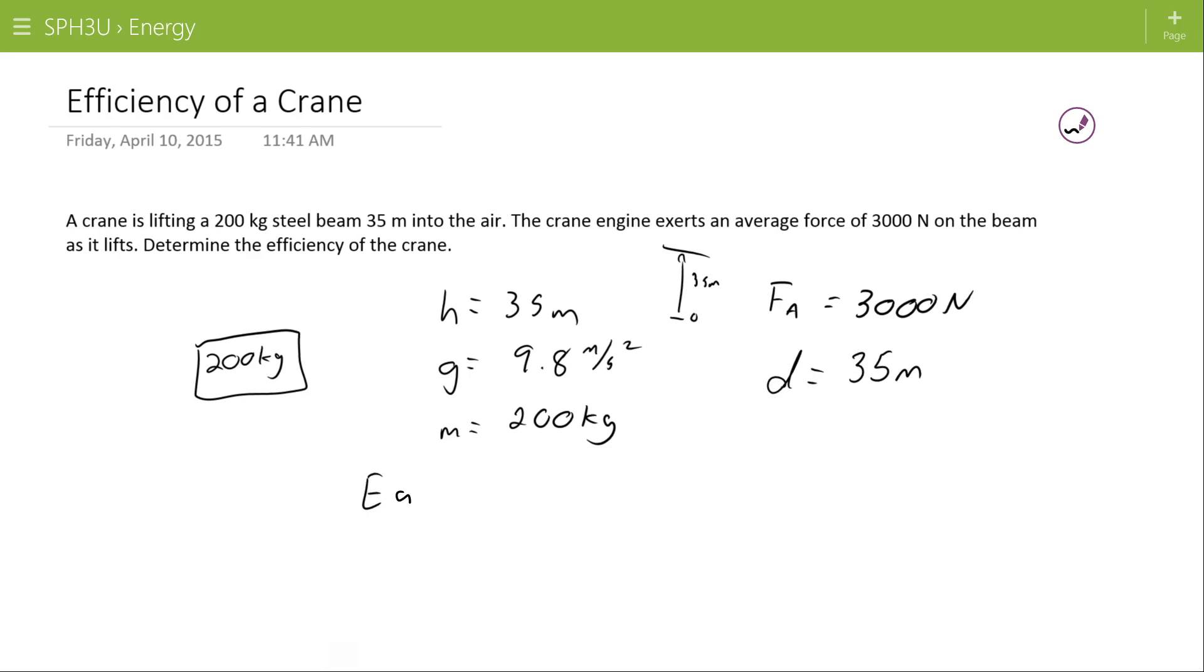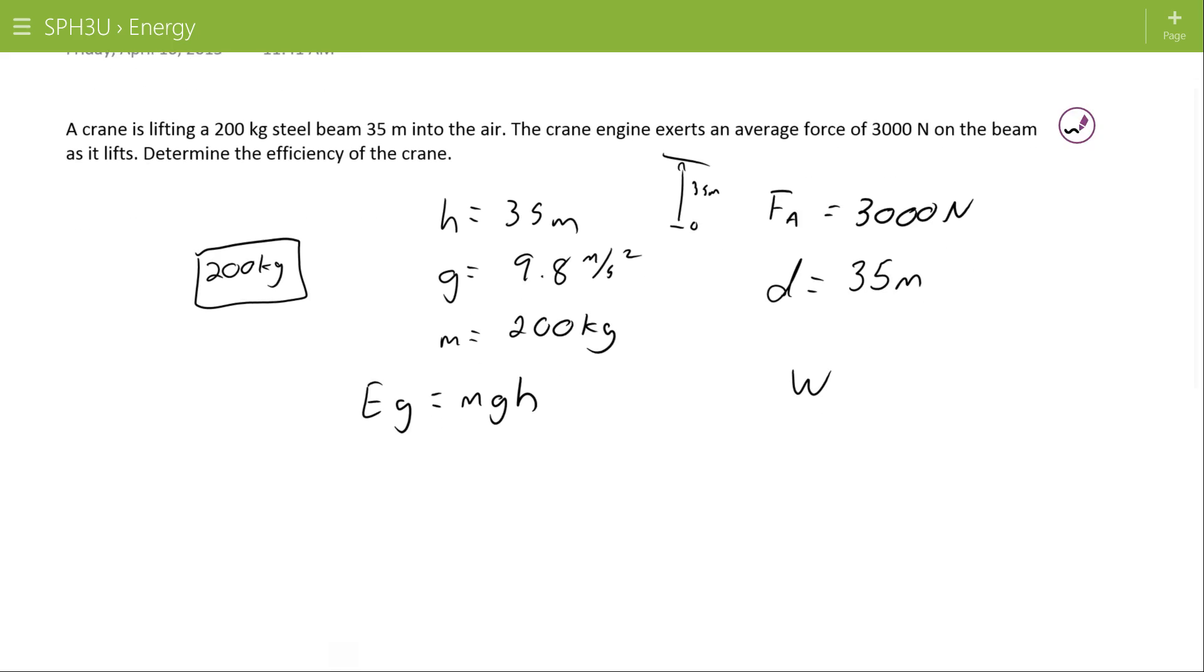So I can get my gravitational potential energy and my work. Gravitational potential is MGH, which is equal to 200 kilograms times 9.8 meters per second squared times the 35 meters. So I would have achieved 68,600 joules of gravitational potential energy by lifting that beam.